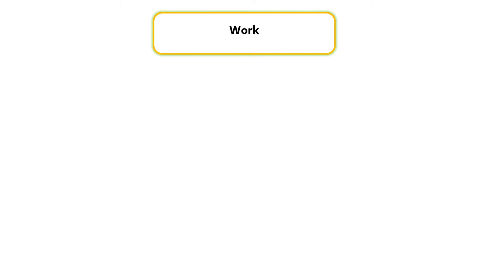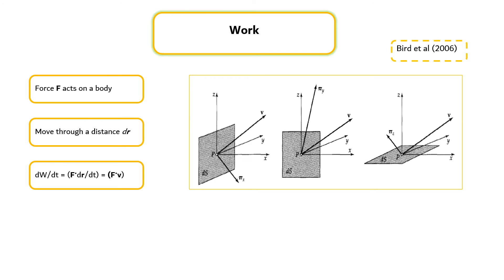When a force F acts on a body and causes it to move through a distance dr, the work done is dw equals to f dr. Then the rate of doing work is the dot product of the force times the velocity. The formula also can be applied to the three perpendicular planes at a point P in space as shown in the right figure.